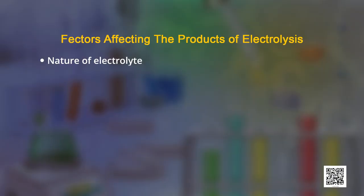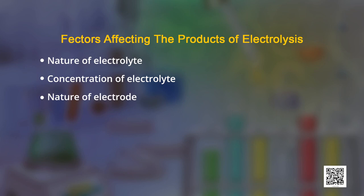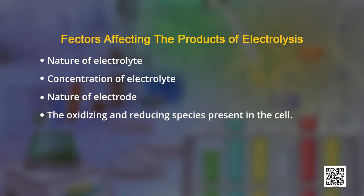During the process of electrolysis, we get the products at the electrodes. These products depend on the nature of the electrolyte, concentration of electrolyte, nature of electrode, and the oxidizing and reducing species present in the cell.